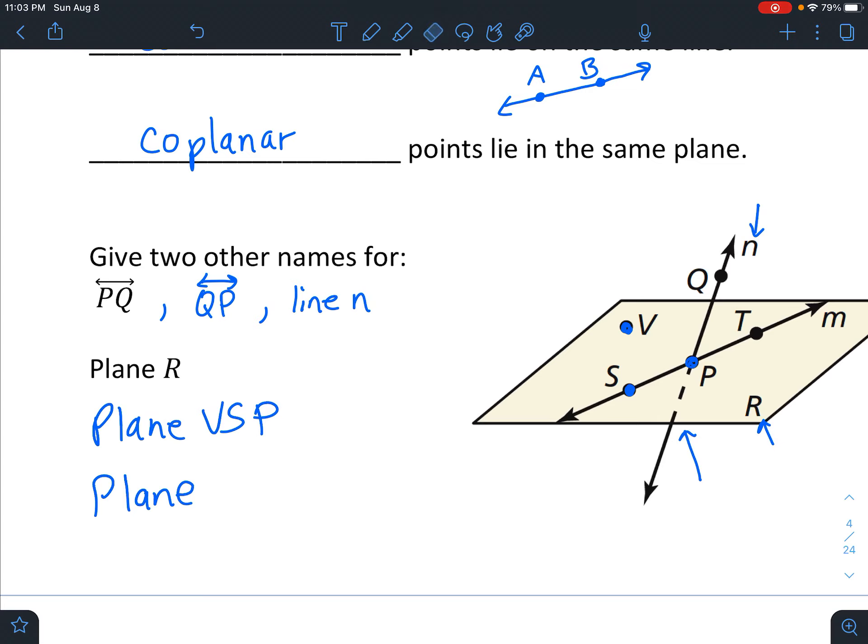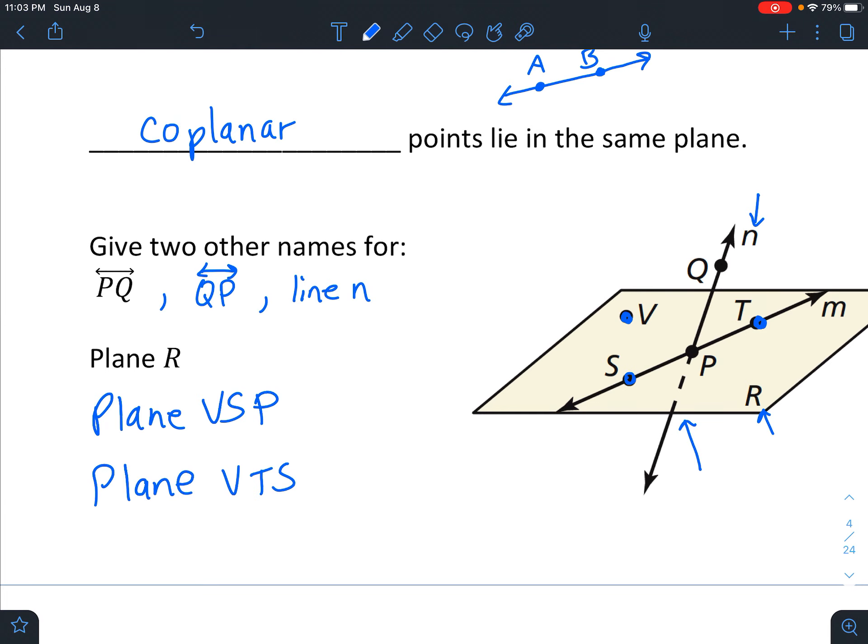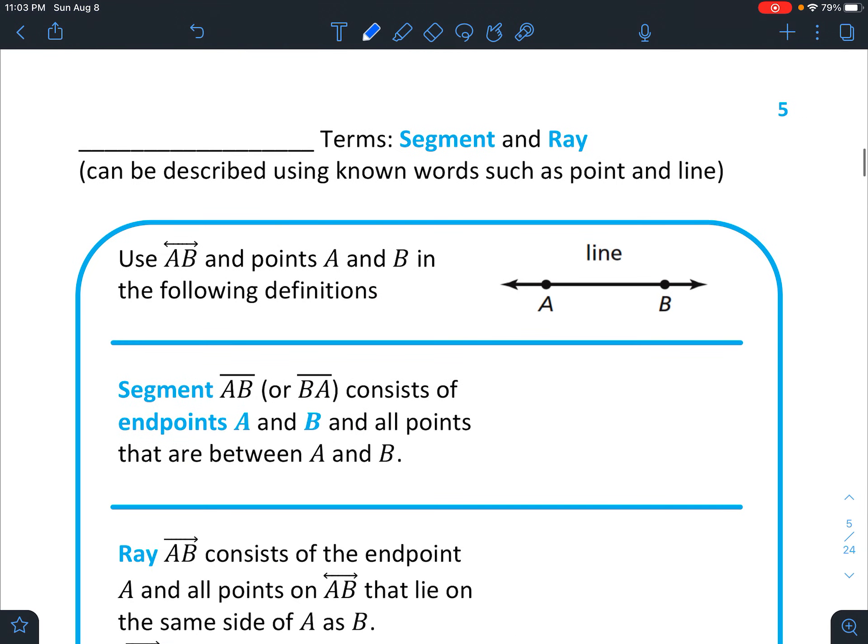And there's lots of different options. Another three points, we could just do them in a different order, or we could use three other points like V, T, S. They're also in the plane, so we could say V, T, S.